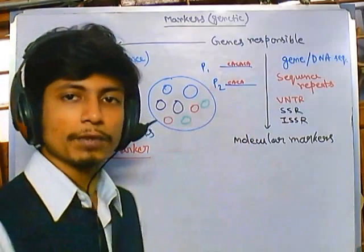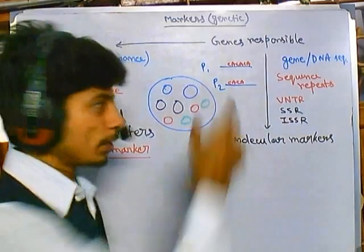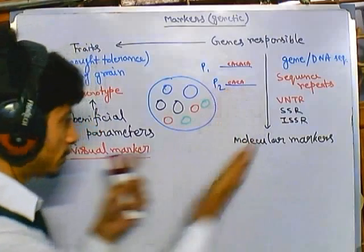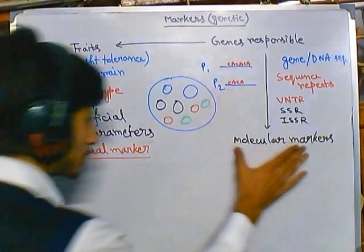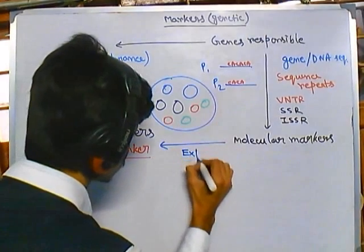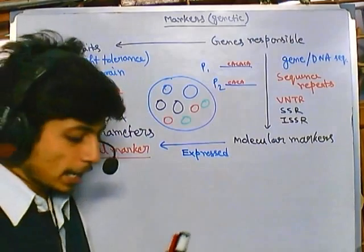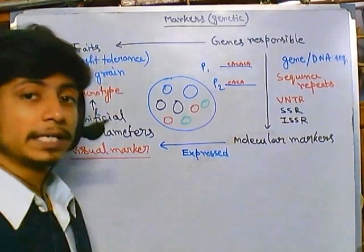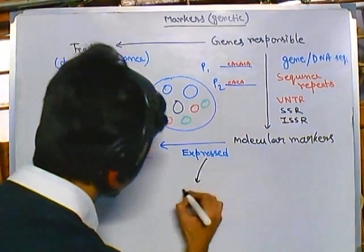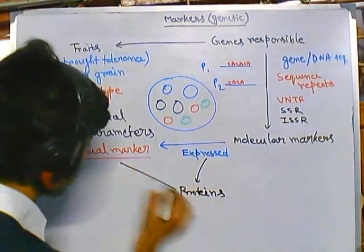These are markers which vary from organism to organism, so we can mark a particular place. The expression of these molecular markers is attached to the visual marker regions — when these molecular markers are expressed, they provide visual expressions. After gene expression we get protein sequences.